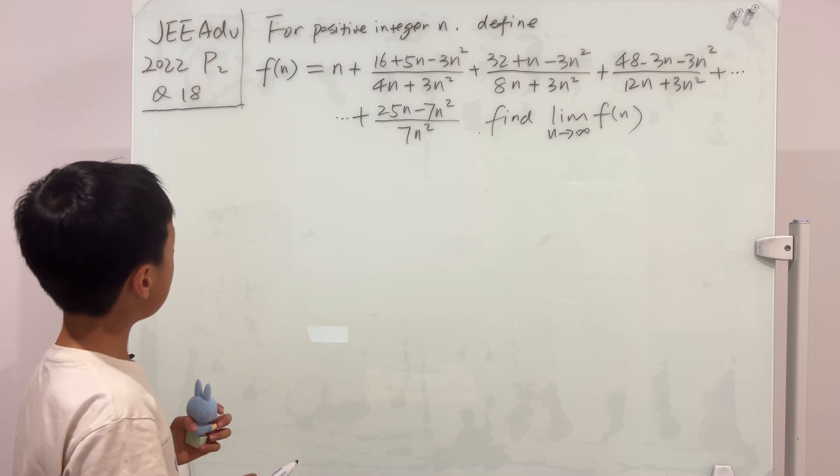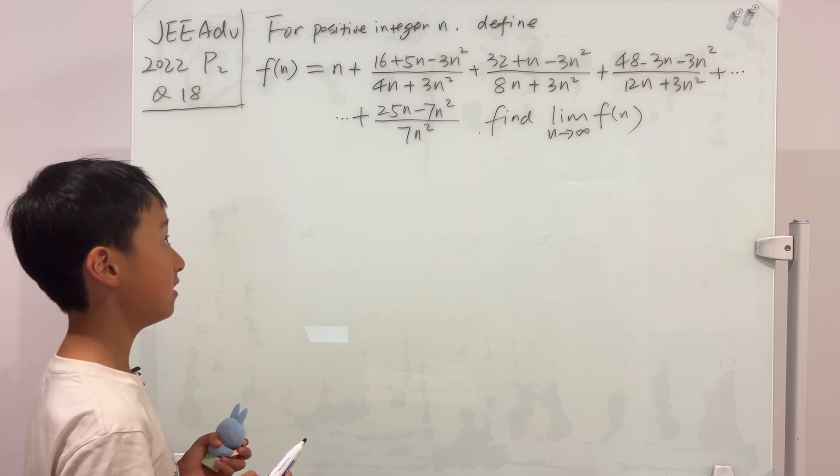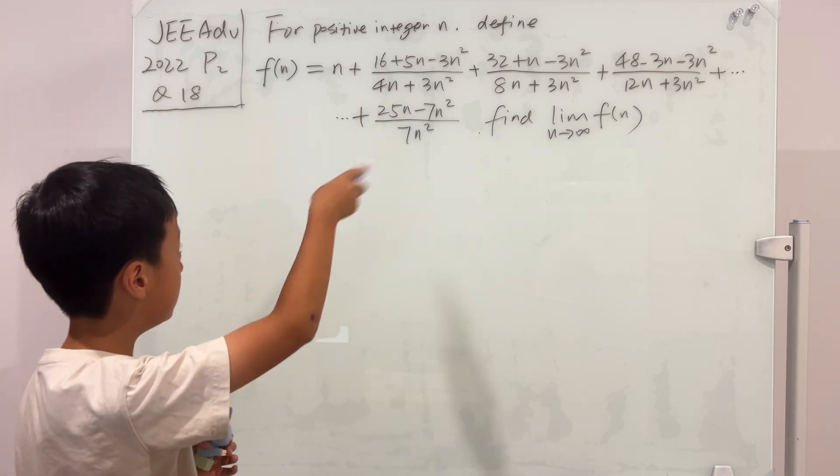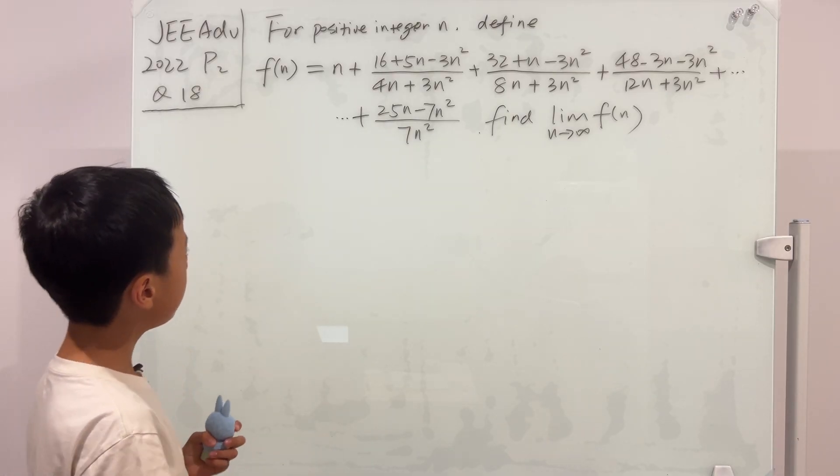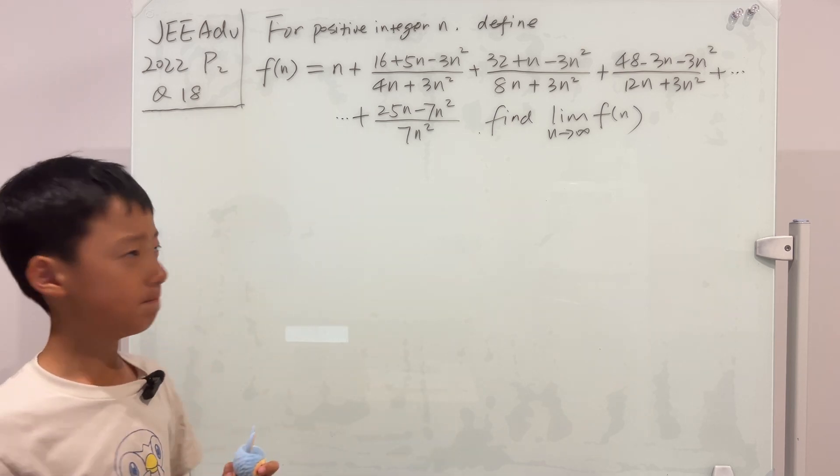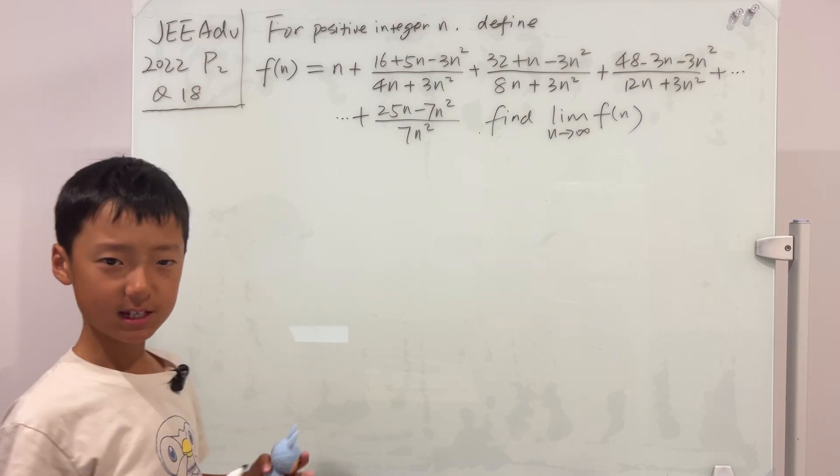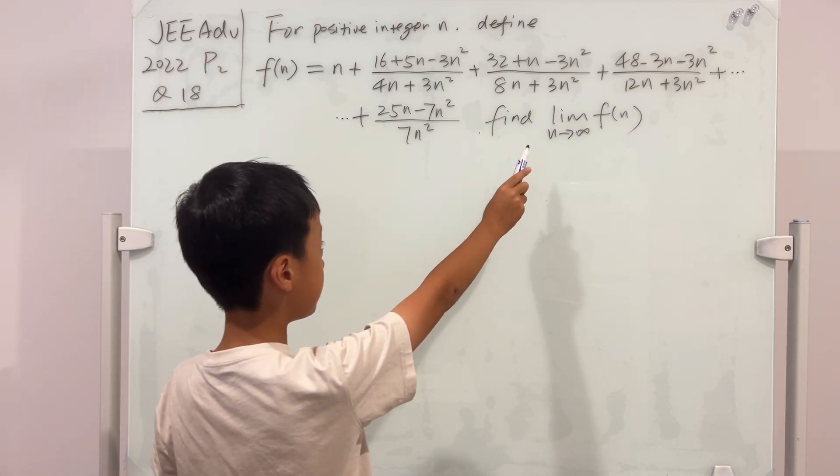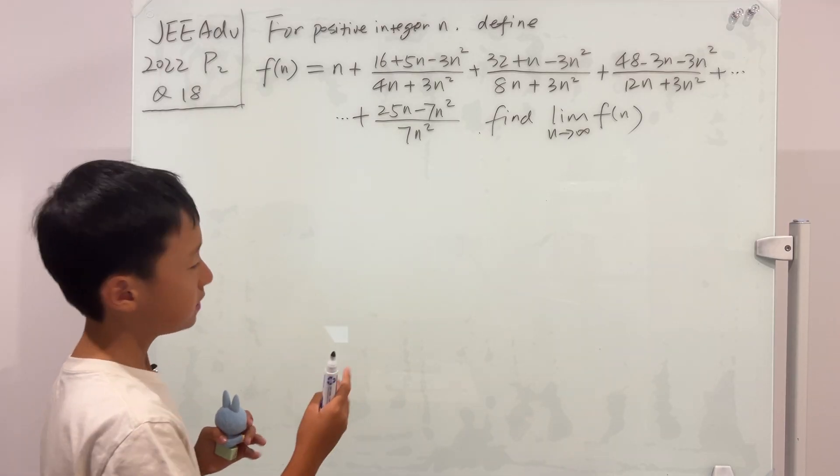This question says that for all positive integers n, we define f(n) as equal to this expression. If we exclude the n at the first term, these terms look like a sum, right? And it asks us to find the limit as n goes to infinity of this function.